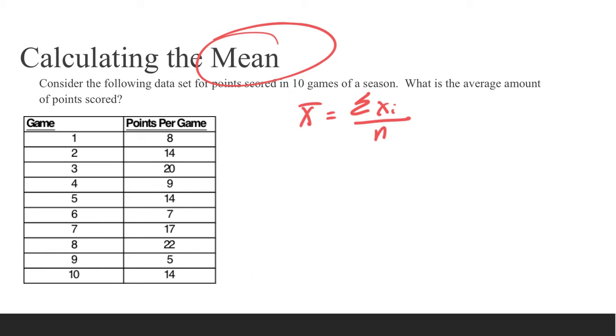This means the sum of all the x values: 8 plus 14 plus 20, 9, 14, 7, 17, 22, 5, 14. If we add all those up we get 130.